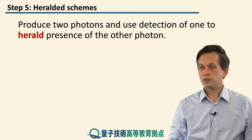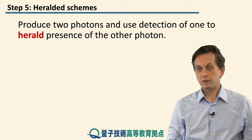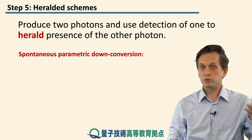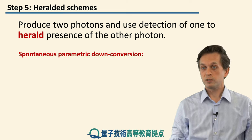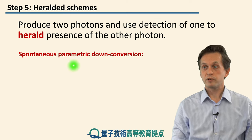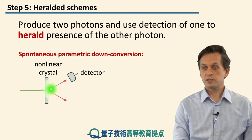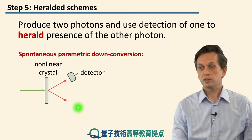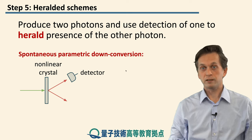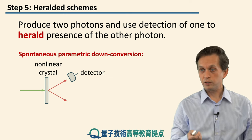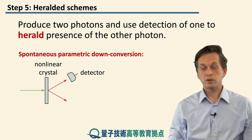A different scheme that yields single photons is using some kind of heralding mechanism. For example, you can produce two photons and detect one, which will also herald the presence of the other. We already saw such a process in previous lessons — it's called spontaneous parametric downconversion (SPDC). Here, you have some nonlinear crystal: you shine light of a certain frequency at the crystal, and that produces two photons as your output. What we can do is detect one of the photons, and if we do, then we know that the other photon is also present.